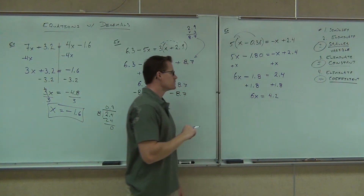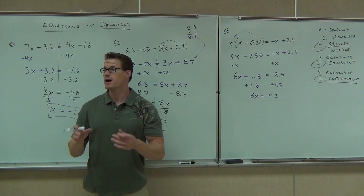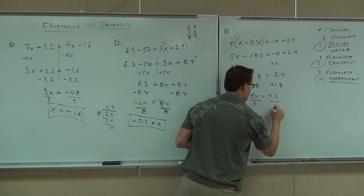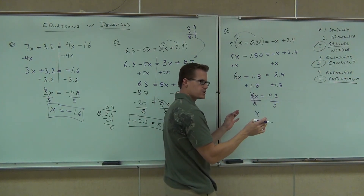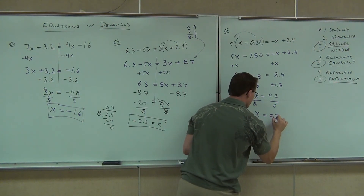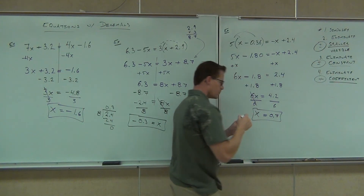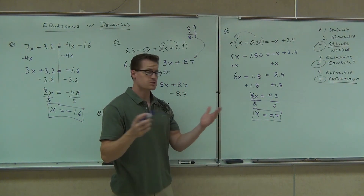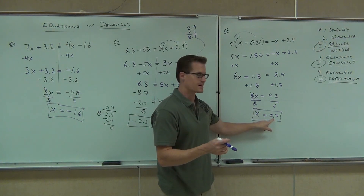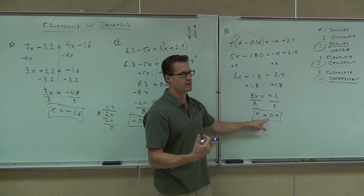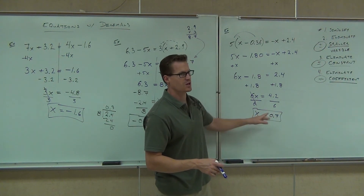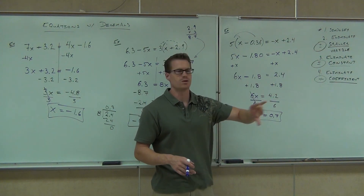And then lastly, we divide. If you divide by 6 — do that on the side — 4.2 divided by 6 gives you 0.7. You can write 0.7 or 0.70, that's fine. As long as we don't have the decimal out of place like 0.07 or 7.0. Zeros at the end of your decimal place don't really make a difference.